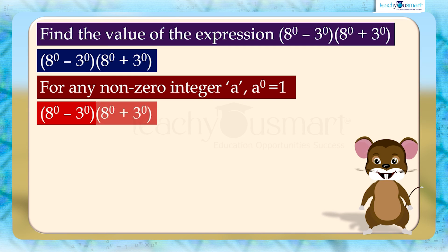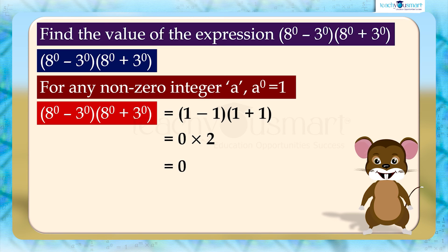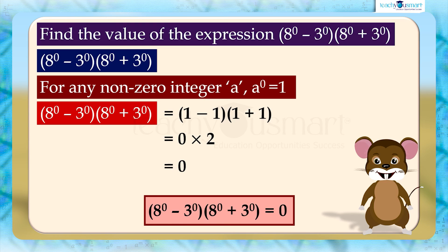That is, (1 minus 1) multiplied by (1 plus 1) equals 0 multiplied by 2, equals 0. Therefore, (8 raised to 0 minus 3 raised to 0) multiplied by (8 raised to 0 plus 3 raised to 0) equals 0.